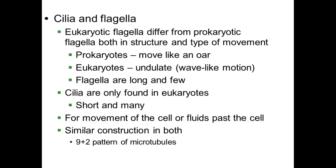Cilia and flagella are structures that allow organisms to move. Flagella are found in prokaryotes as well as eukaryotes, but cilia are only found in eukaryotes. Eukaryotic flagella are different from prokaryotic flagella in both structure and function. Prokaryotes are much smaller, so we can't see their flagella with a light microscope. Prokaryotic flagella also move around a pivot, moving more like an oar. Eukaryotic flagella move in a wave-like motion called undulation. Flagella on cells are long and few, whereas cilia, found only in eukaryotes, are short and many.